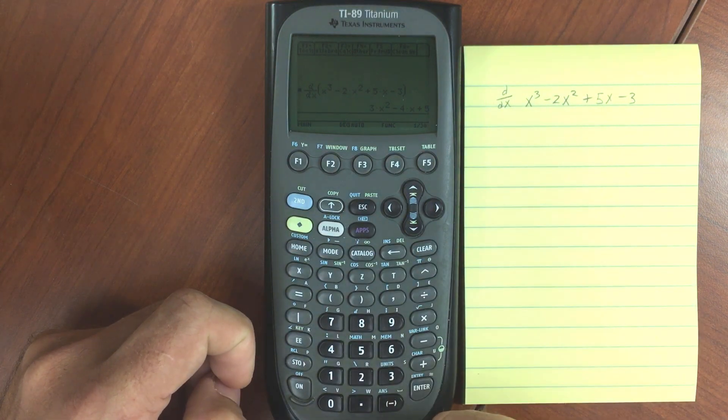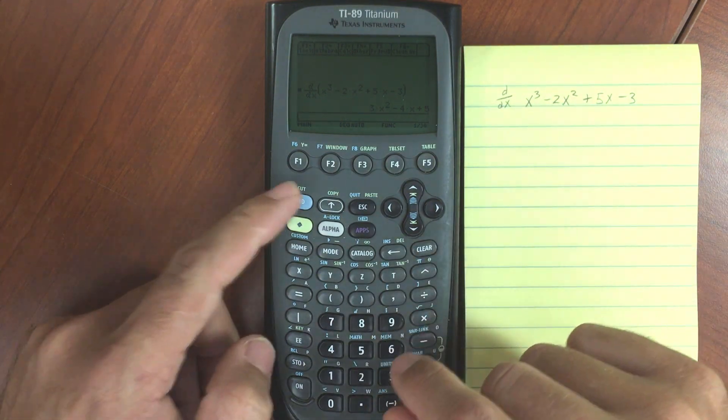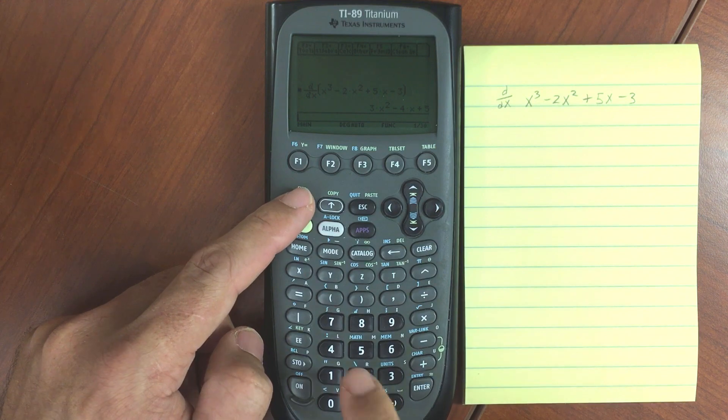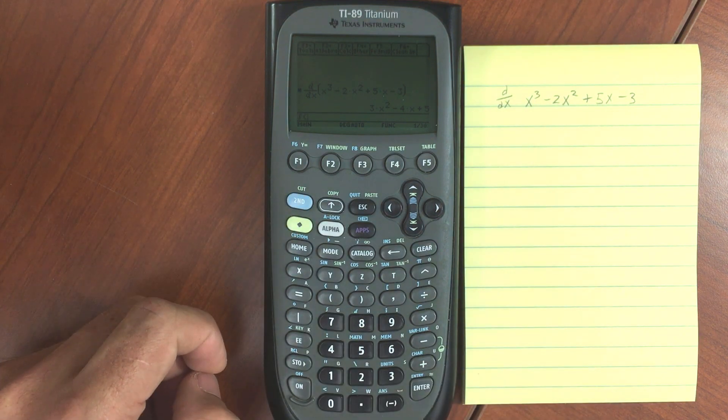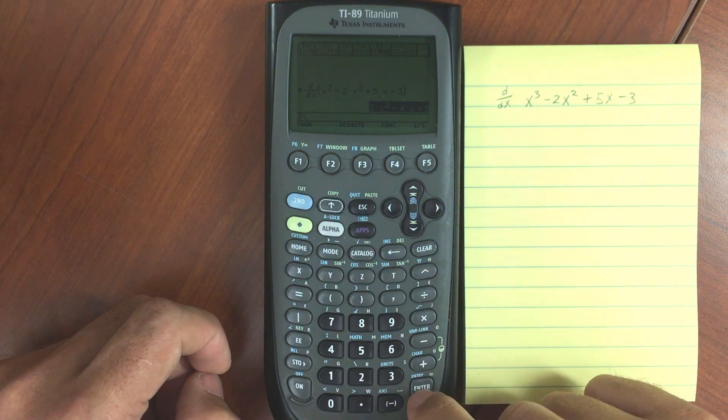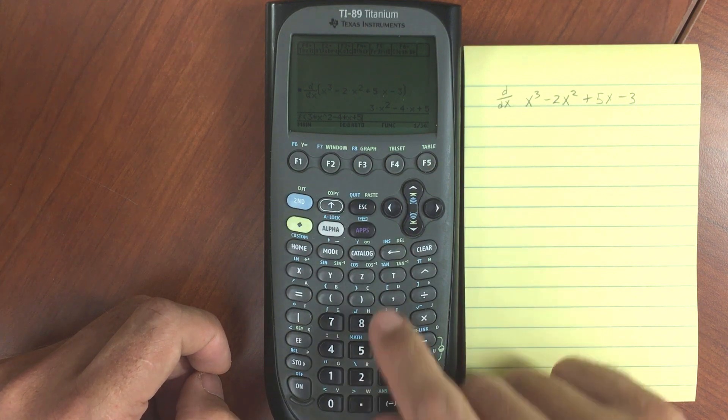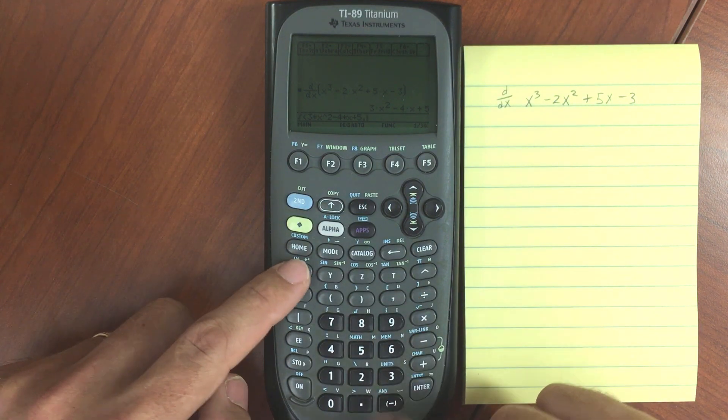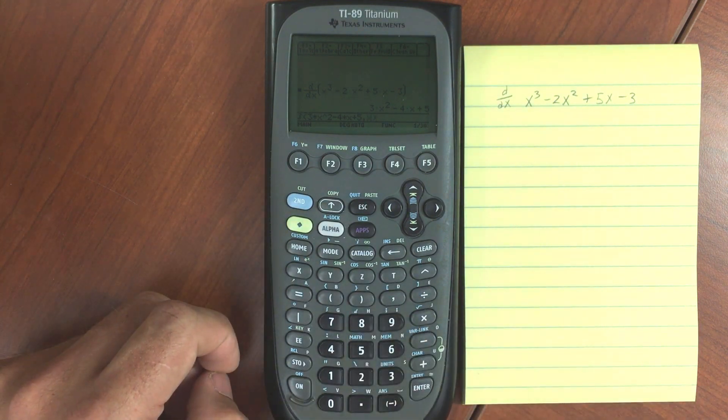Now let's say we want to integrate that same thing. Again, you can go through those menus, or right above the number 7 key is integrate. And I'm just going to go ahead and grab that whole thing right there. And then integrate with respect to x. Let's just run this first.